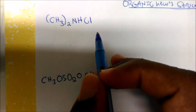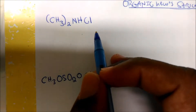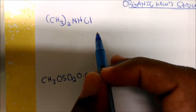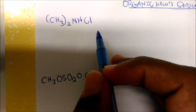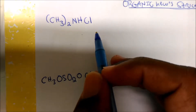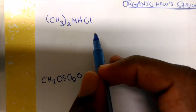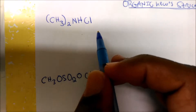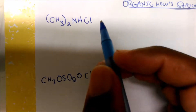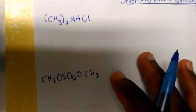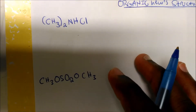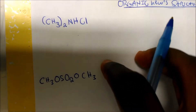Hey guys, so this will be about the most important thing you want to be able to do before you advance further in organic chemistry: drawing basic Lewis structures. Let's go over some examples.